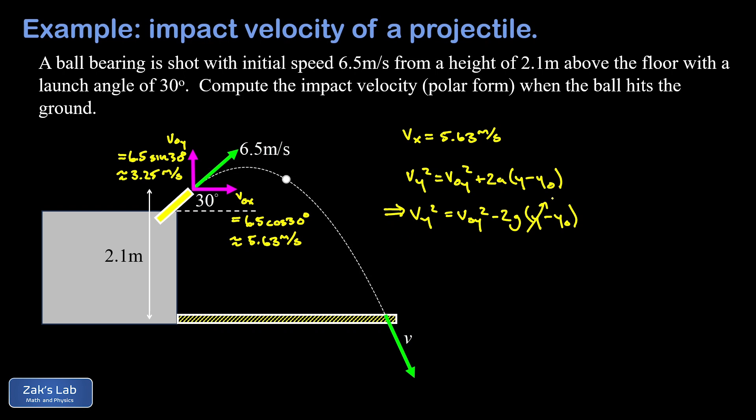I want to point out the y final is zero if we're using a standard coordinate system where we put the origin at the floor. Everything else can just be plugged in, so I have 3.25 squared minus 2 times g, we're going to use 9.8 for that, and then I have a negative y naught and y naught is 2.1 meters. If we smash all those numbers together we get on the right hand side of the equation about 51.72. We still have to square root to solve for v_y and that gives us about 7.19 meters per second.